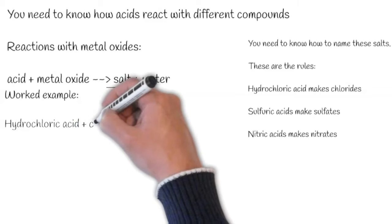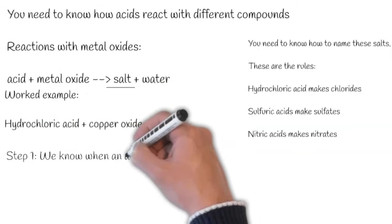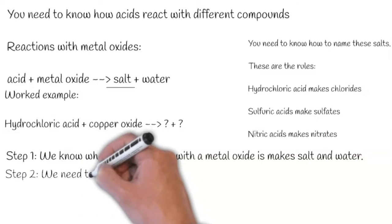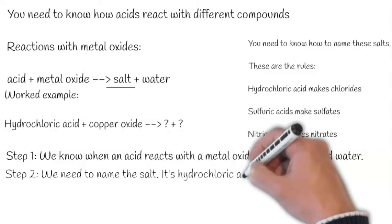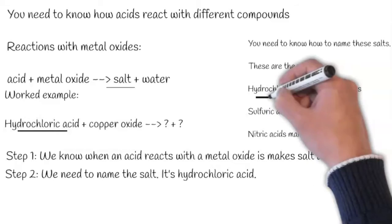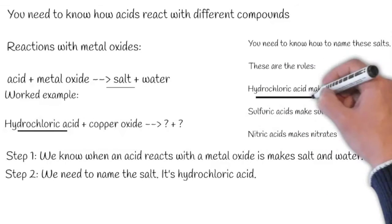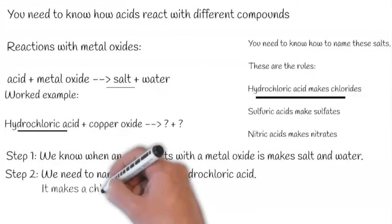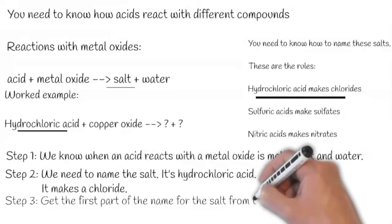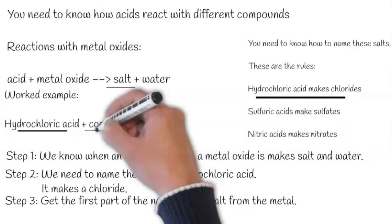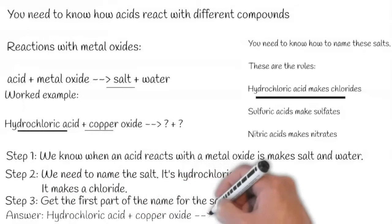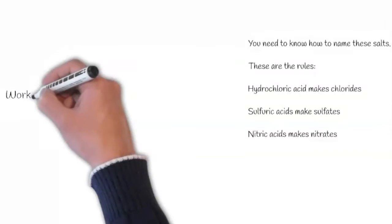Let's go through a worked example. Hydrochloric acid plus copper oxide makes what? We know when an acid reacts with a metal oxide, it makes salt and water. We need to know the name of the salt. It's hydrochloric acid, and we know that hydrochloric acid makes a chloride. Get the first part of the name for this chloride from the metal — it's copper. So it's hydrochloric acid plus copper oxide makes copper chloride plus water.